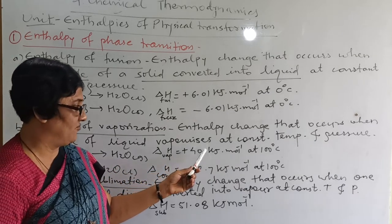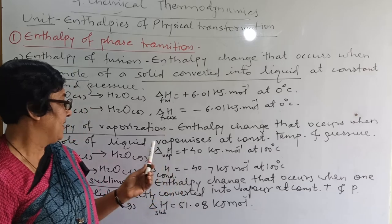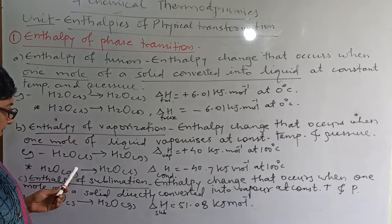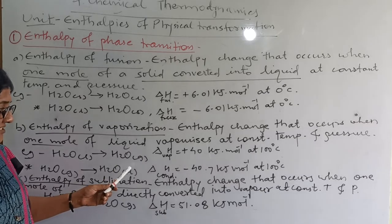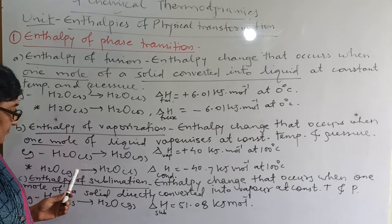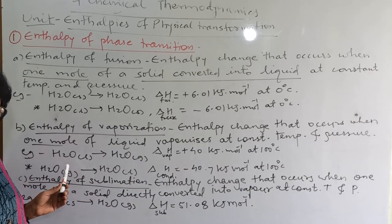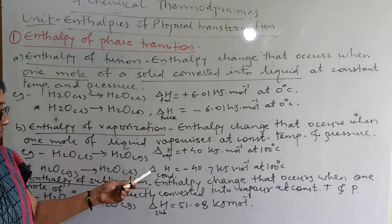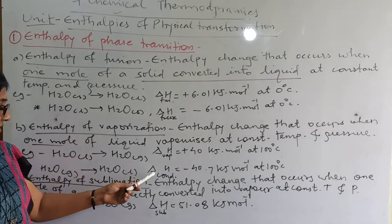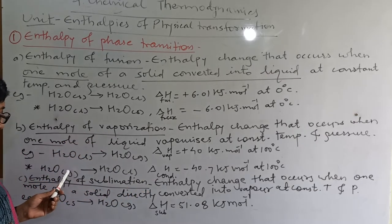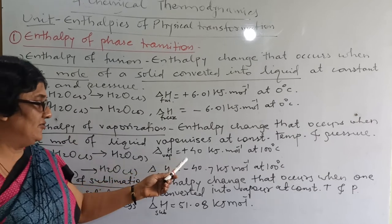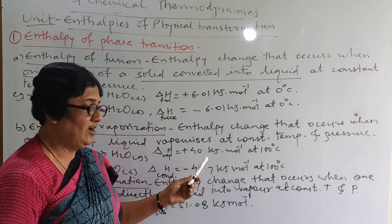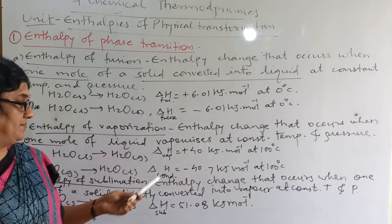Delta H vaporization is +40 kJ/mol. When the reverse reaction takes place — conversion of gas to liquid — that is condensation. You can write the definition on your own: instead of vaporization, write condensation and conversion of gas to liquid. The value is exactly opposite — instead of +40, it is −40.7 kJ/mol, nearly the same figure.